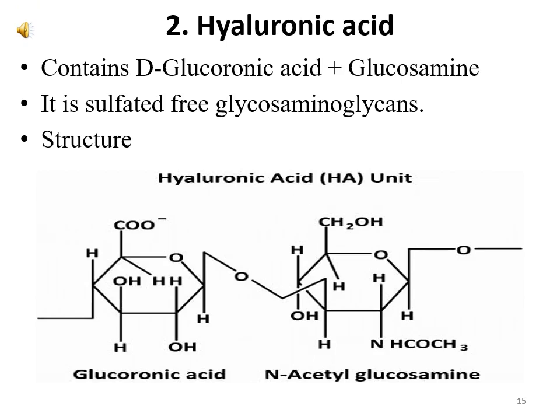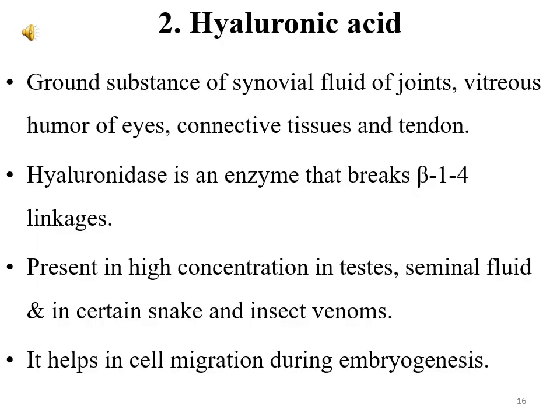Hyaluronic acid consists of D-glucuronic acid and glucosamine. It is an unsulfated glycosaminoglycan. Glucuronic acids can be made from glucose by removing hydrogen from the number 6 carbon position. Glucuronic acid combines with N-acetylglucosamine to produce hyaluronic acid. It is the ground substance of synovial fluid of joints, vitreous humor of the eyes, connective tissues, and tendons.